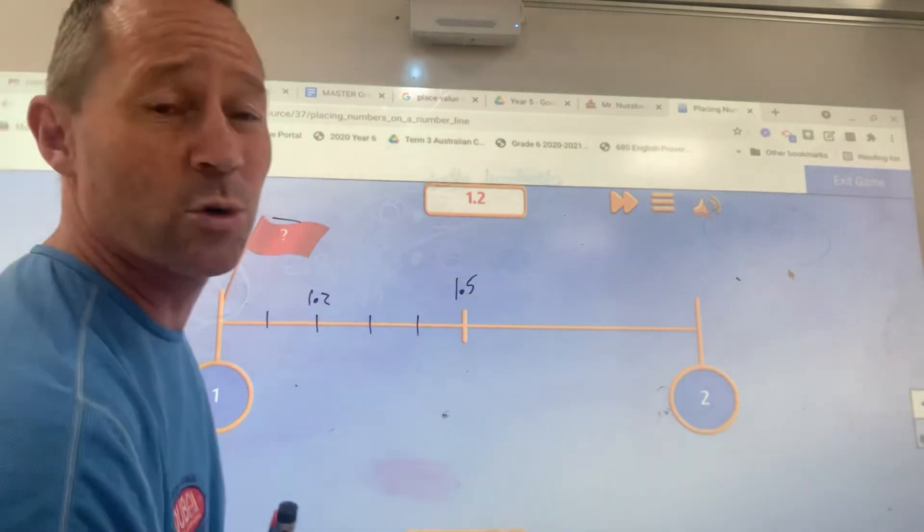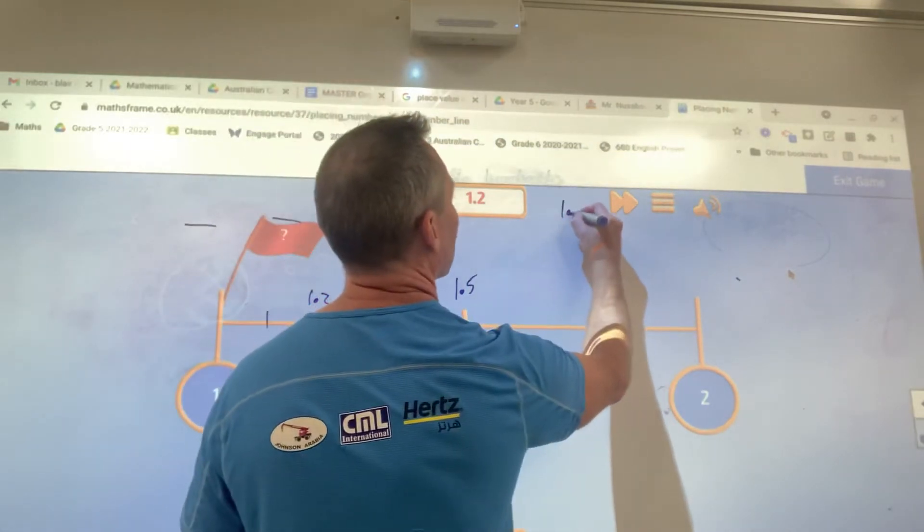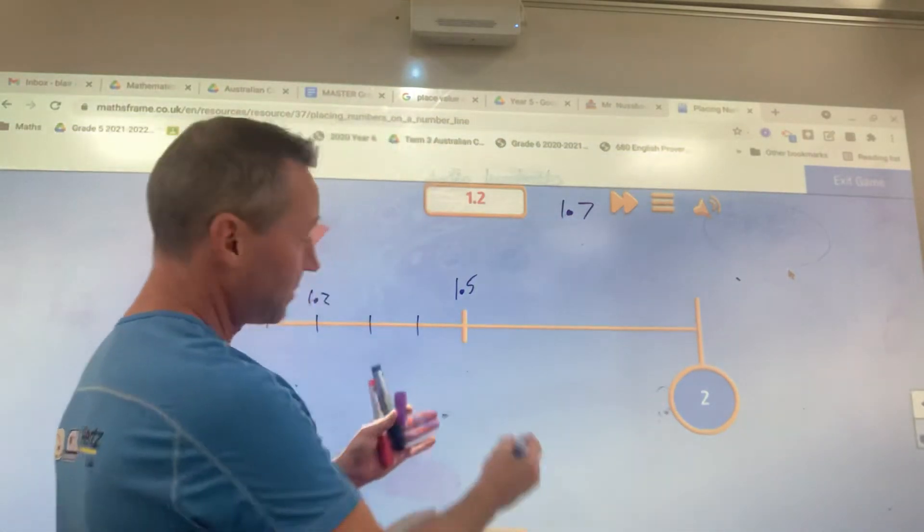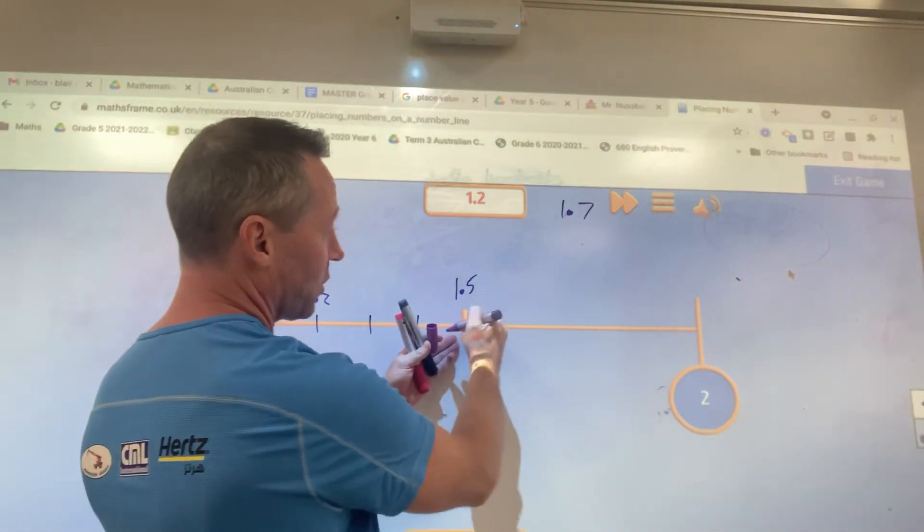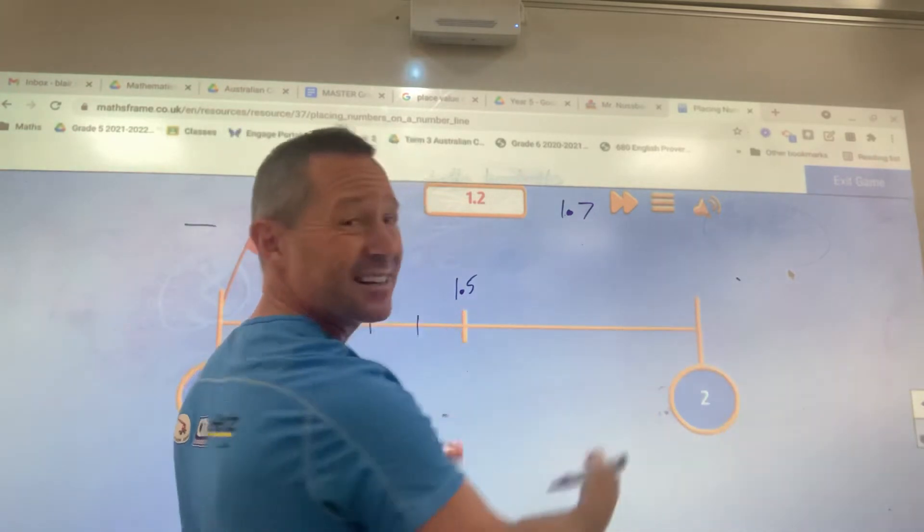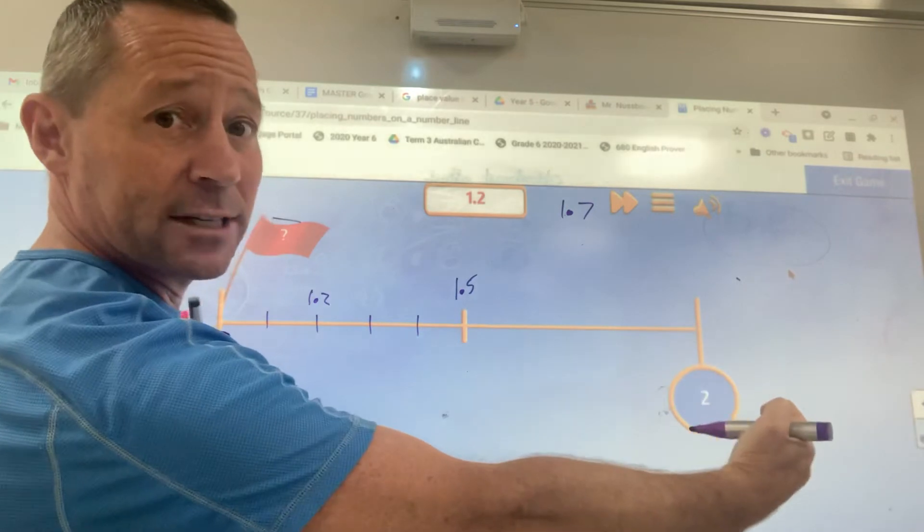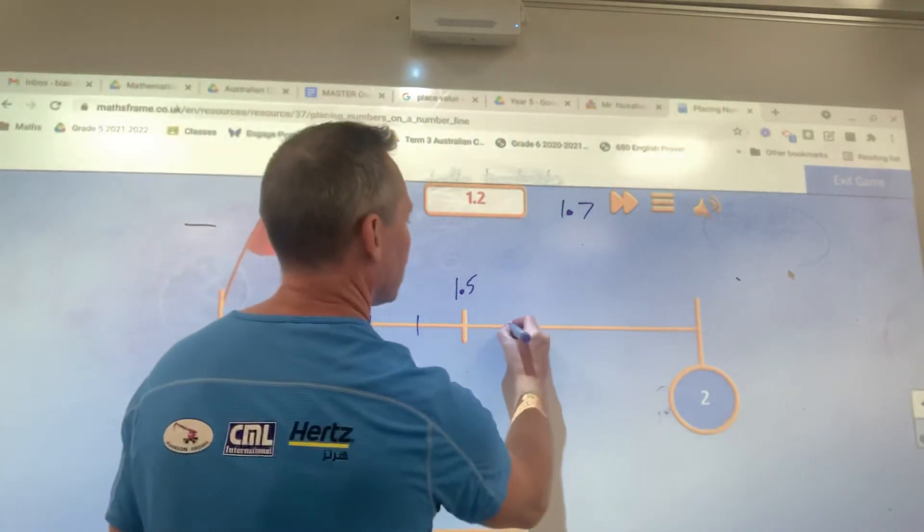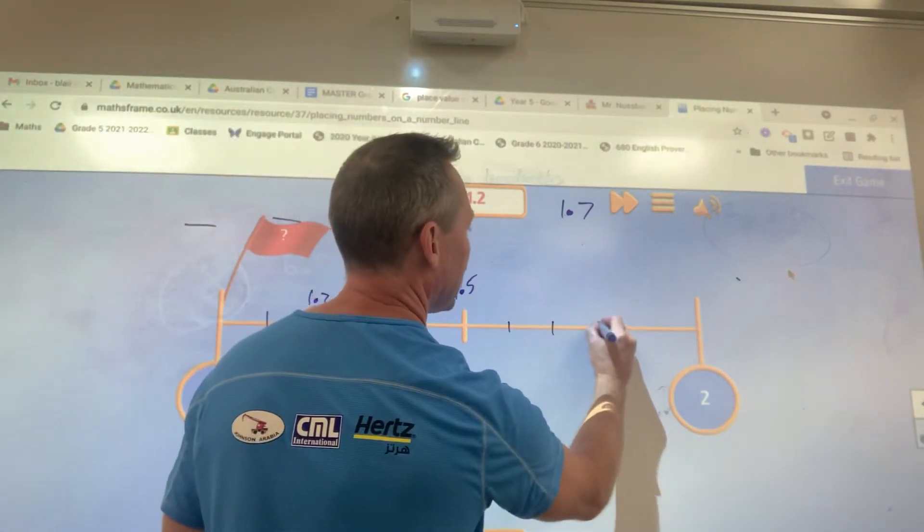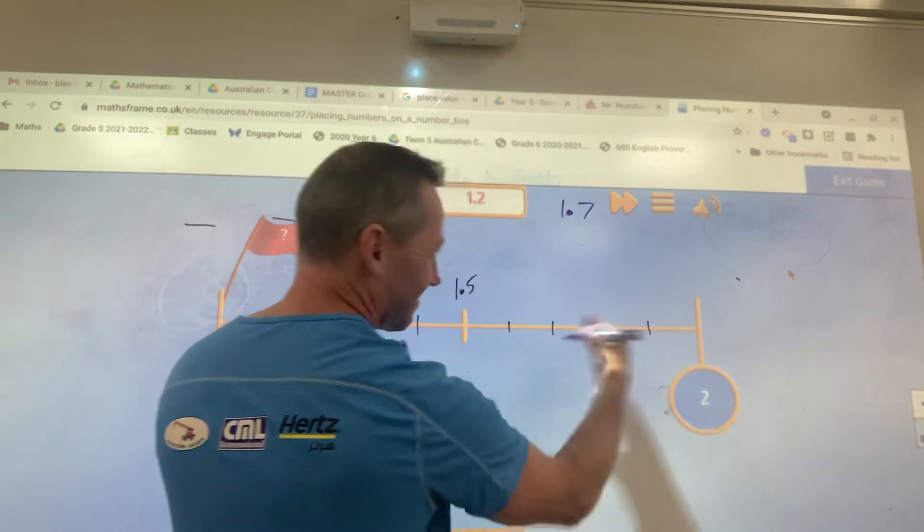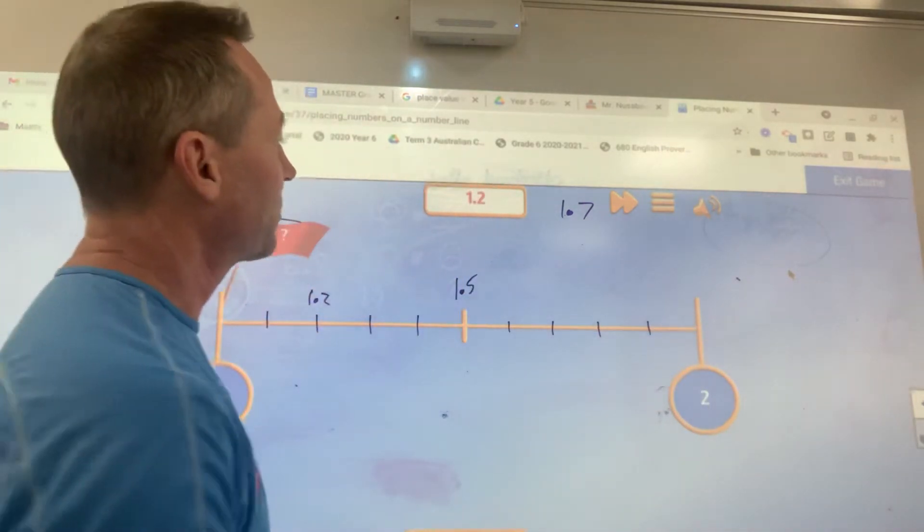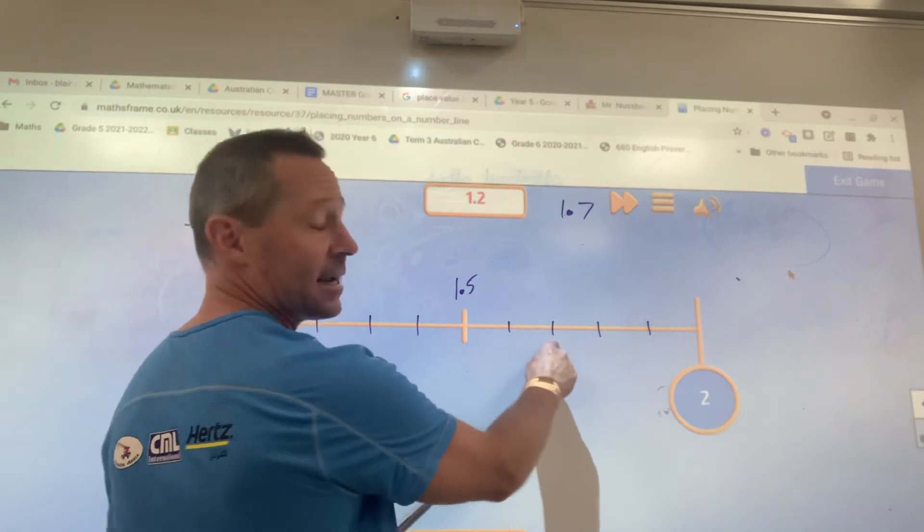What about if it was 1.7? Okay. That's 1.5. Divide this half here into 5 equal bits. From 1 to 2, you're going to divide it into 10 bits, and you want to make it equal. So 1.7 would go here.